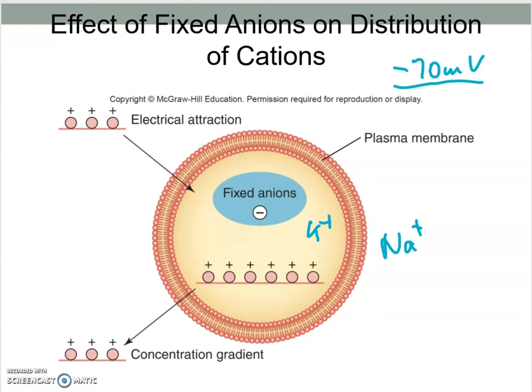A helpful analogy: imagine your friend has a thousand dollars and you have a hundred. Both of you are in the positive — you both have money — but your friend has far more. Comparing yourself to your friend, you have nine hundred dollars less; it's not that you're negative, you just have less. It's the same with cells: sodium and potassium are both positively charged, but the fixed ions inside the cell and relatively fewer potassium ions compared to sodium mean the interior of the cell is negative compared to the outside.